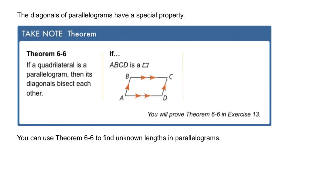So in the diagram, if ABCD is a parallelogram, then segment AE is congruent to segment CE, and segment BE is congruent to segment DE.